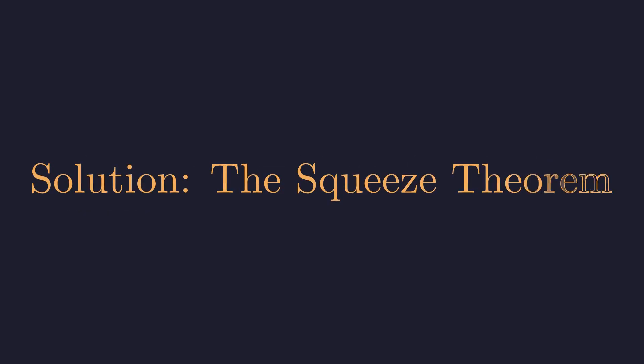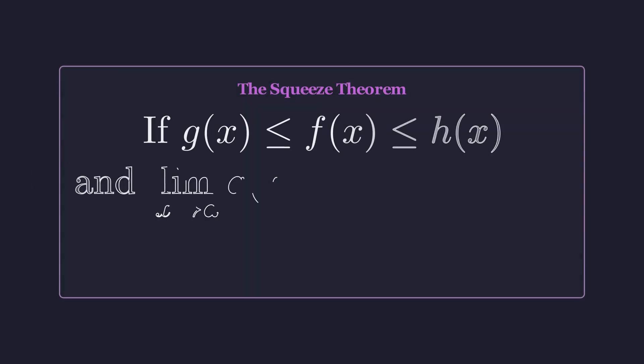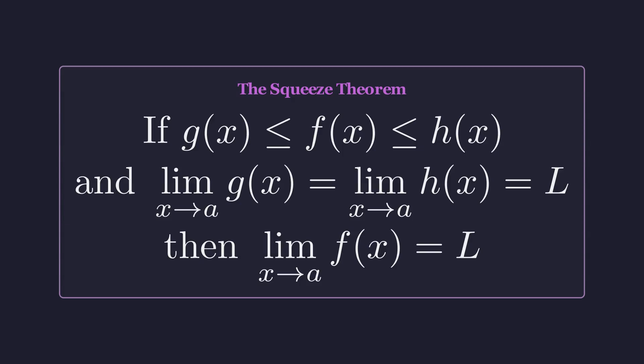So we need a different tool. The squeeze theorem is perfect for this job. The squeeze theorem, sometimes called the sandwich theorem, says that if we can trap our function between two simpler functions that are both heading to the exact same limit, then our function has no choice but to go to that same limit as well.